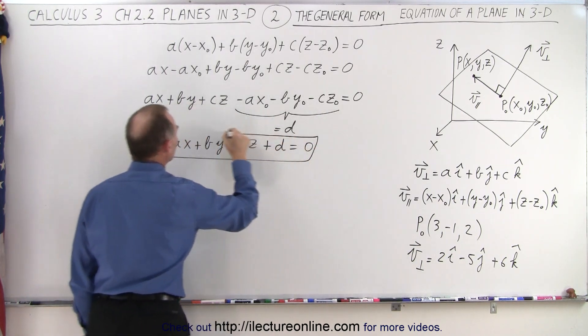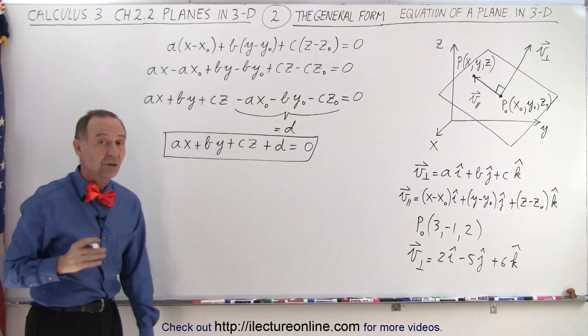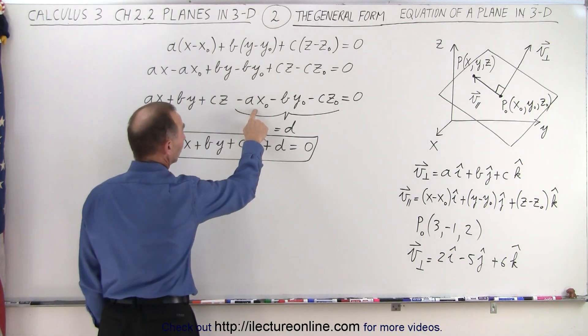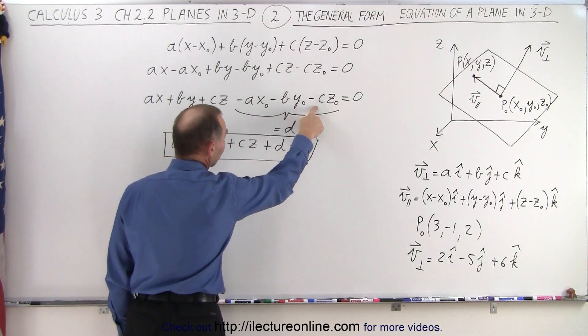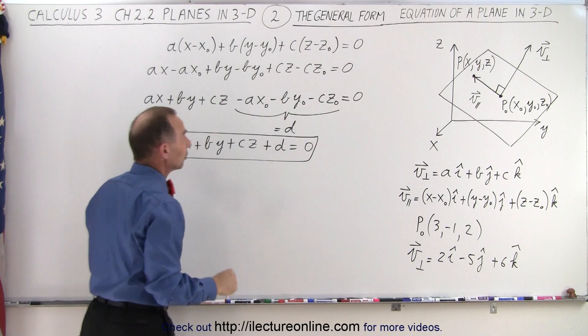And that is the general form of an equation in three dimensions. So we take these three terms, Ax sub-naught, By sub-naught, Cz sub-naught. Notice we take the negative of those, and we set that equal to D.